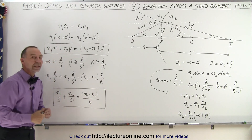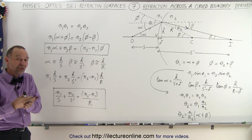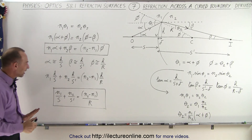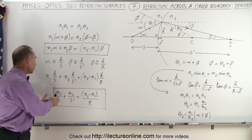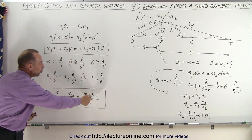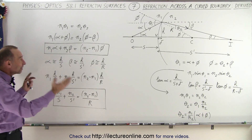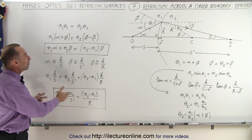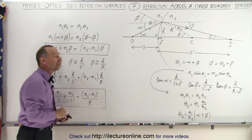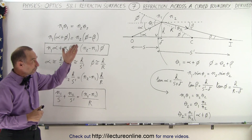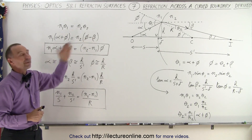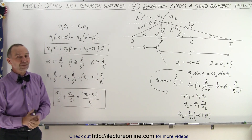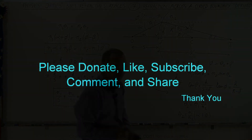That is the equation that helps us determine the position of the image based on where the object is, the radius of curvature of the boundary, and the indices of refraction on both sides. This is how the equation was derived, in case you were wondering. If you do it carefully, one step at a time, it's not so bad. Thank you.